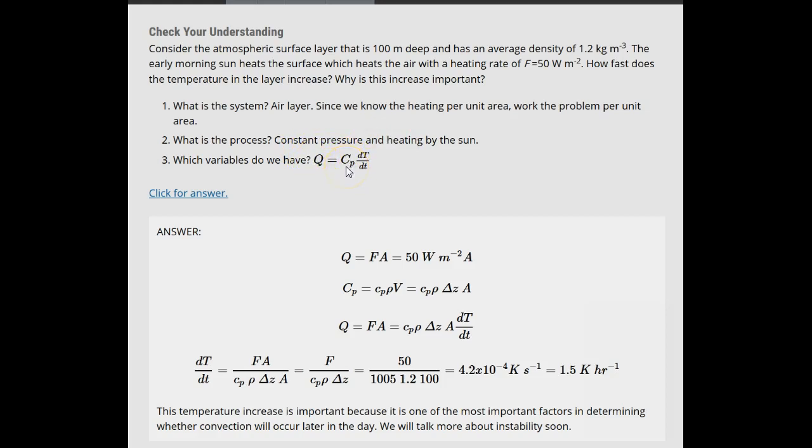If a heating rate is given in watts per meter squared, then we can multiply by some arbitrary area to get the total heating rate. Almost always, atmospheric heating and cooling occurs at constant pressure.